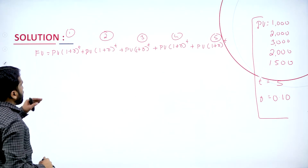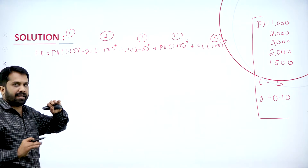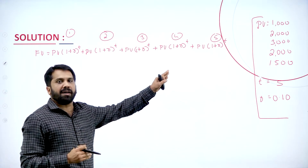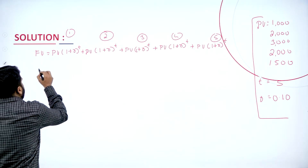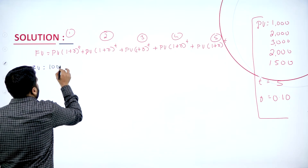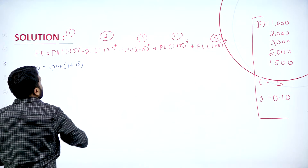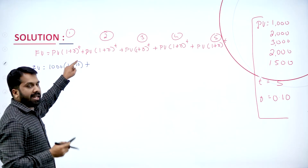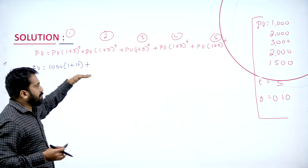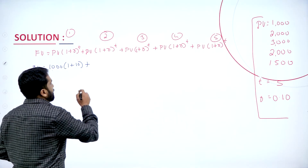Remember: whatever present value you have taken, the same present value you write, but every year the present value changes. The future value equals: first present value is 1,000, then 1 plus the rate 0.10 — I will fill in the number of years later. The second term will be 2,000 multiplied with 1 plus 0.10.